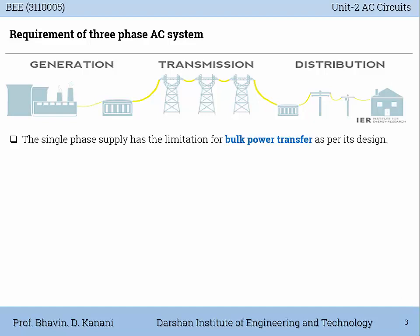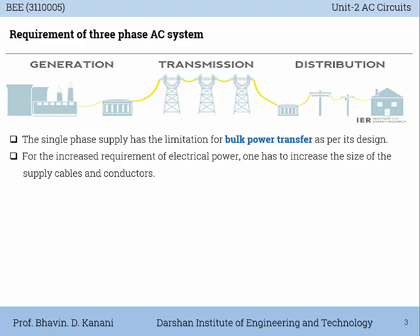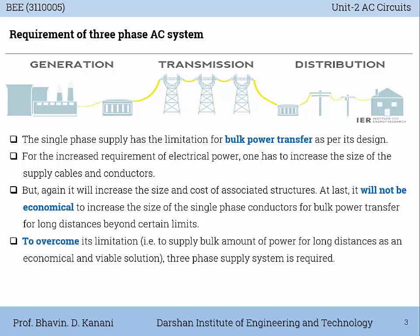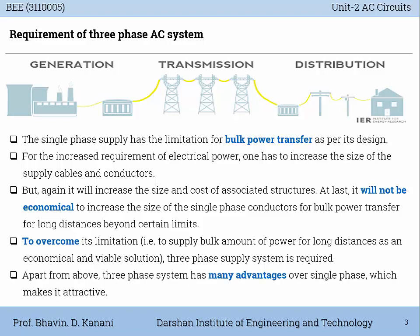The single-phase supply has limitations for bulk power transfer. As per its design, for the increased requirement of electrical power, one has to increase the size of the supply cables and conductors, which will increase the size and cost of associated structures. It will not be economical to increase the size of single-phase conductors for bulk power transfer over long distances beyond certain limits. To overcome this limitation, a three-phase supply system is required.